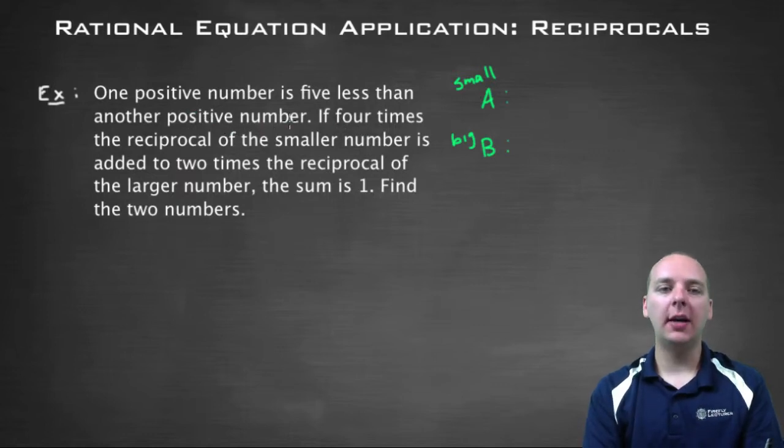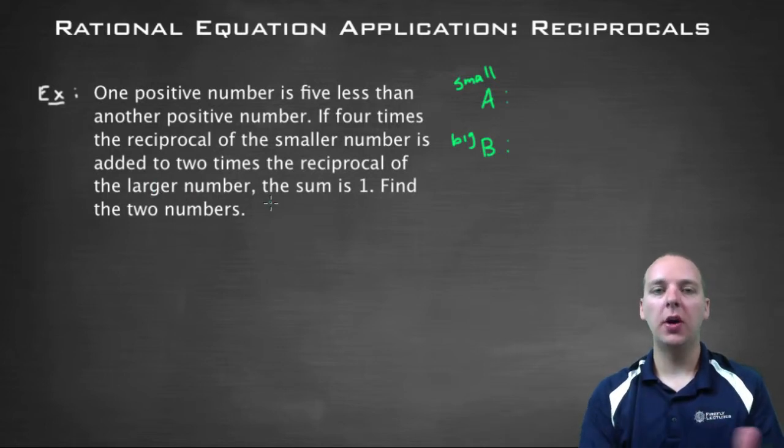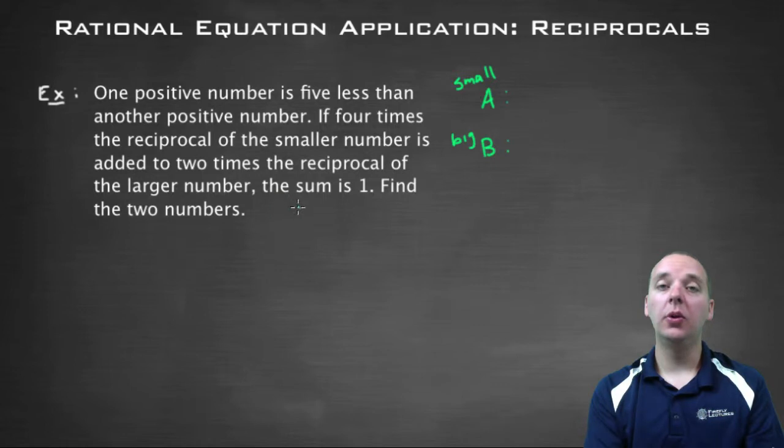It says if four times the reciprocal of the smaller number is added to two times the reciprocal of the larger number, then the sum of those two quantities is one. And we need to try to find what those two numbers are.